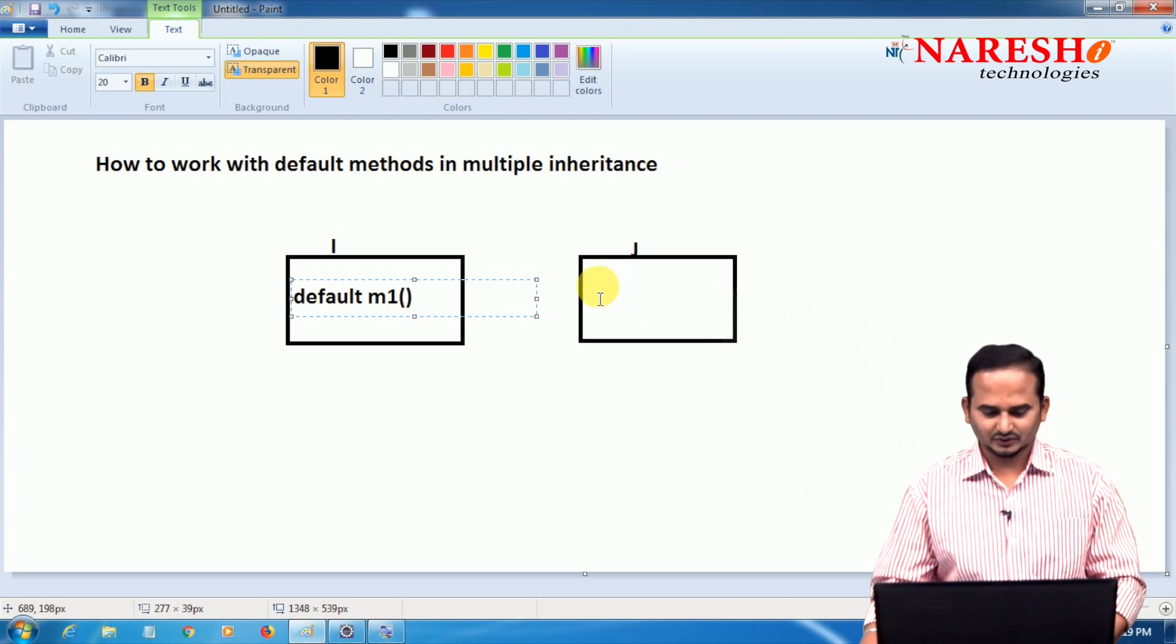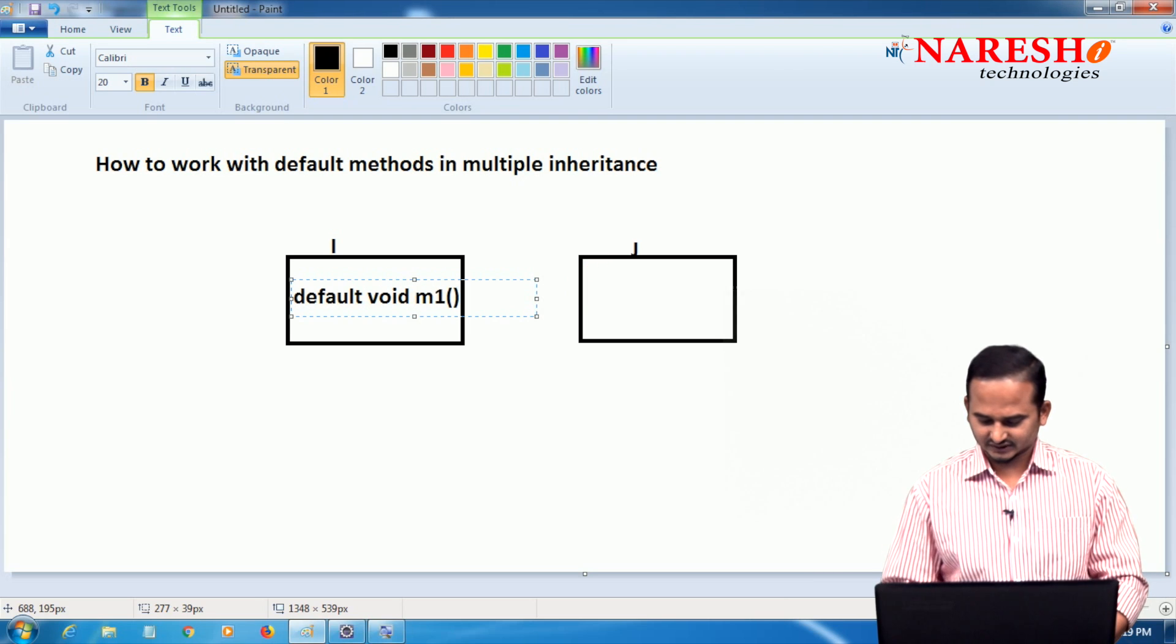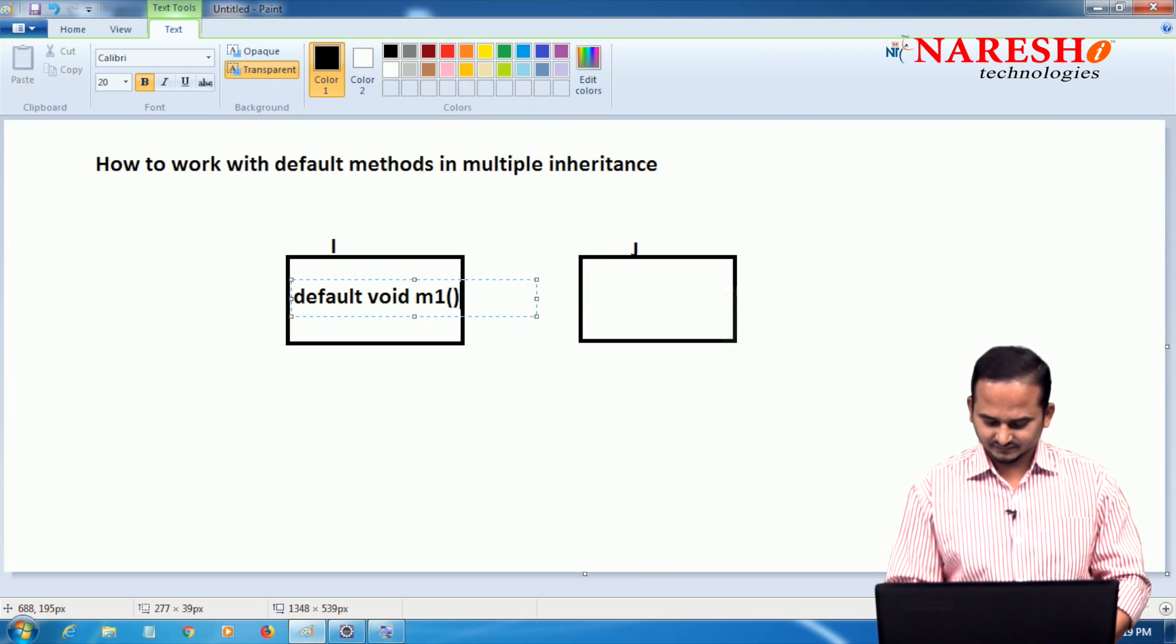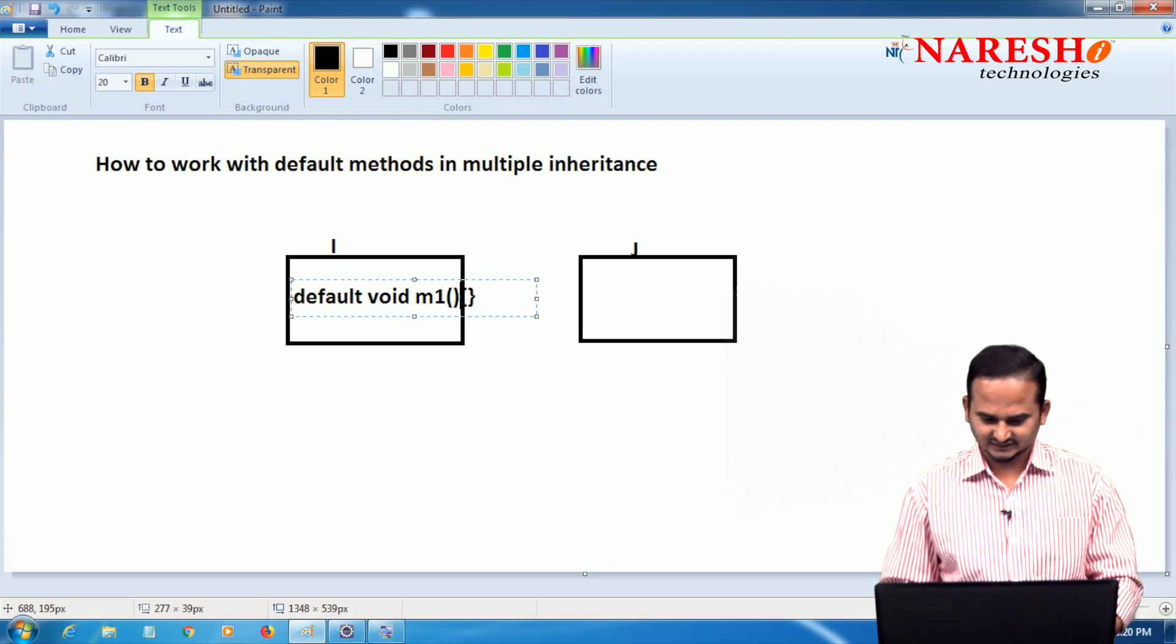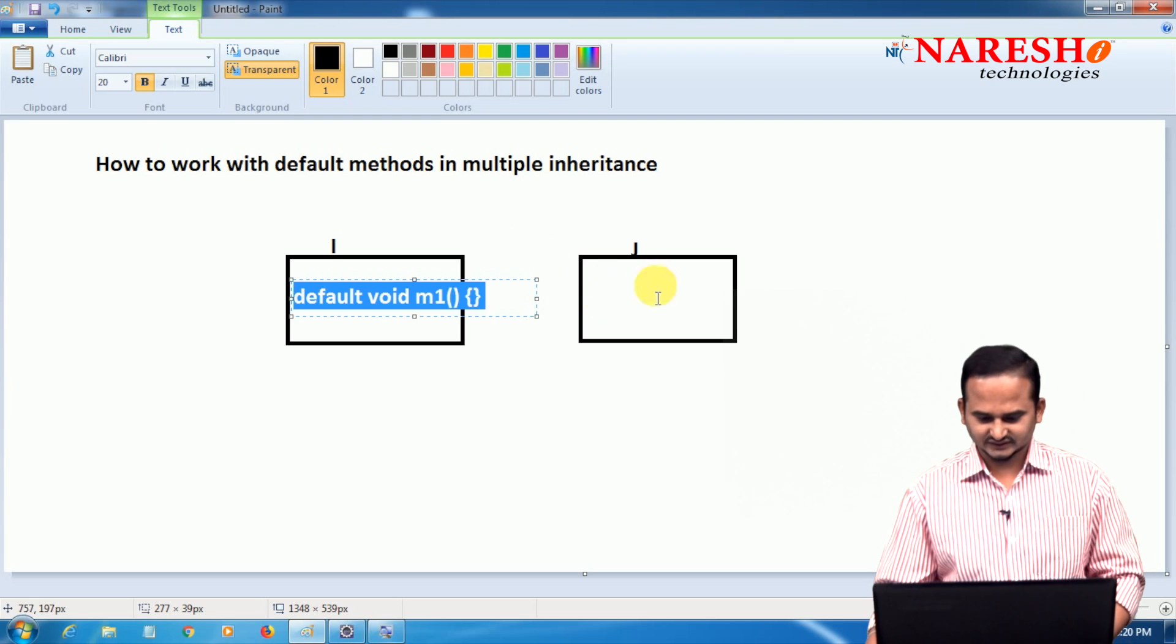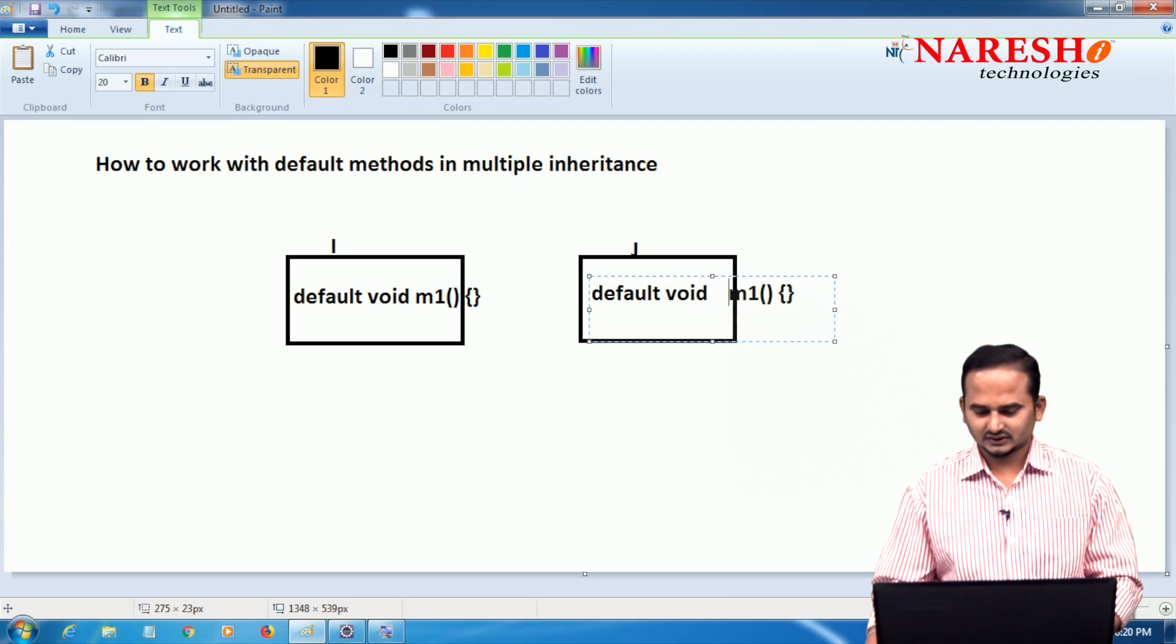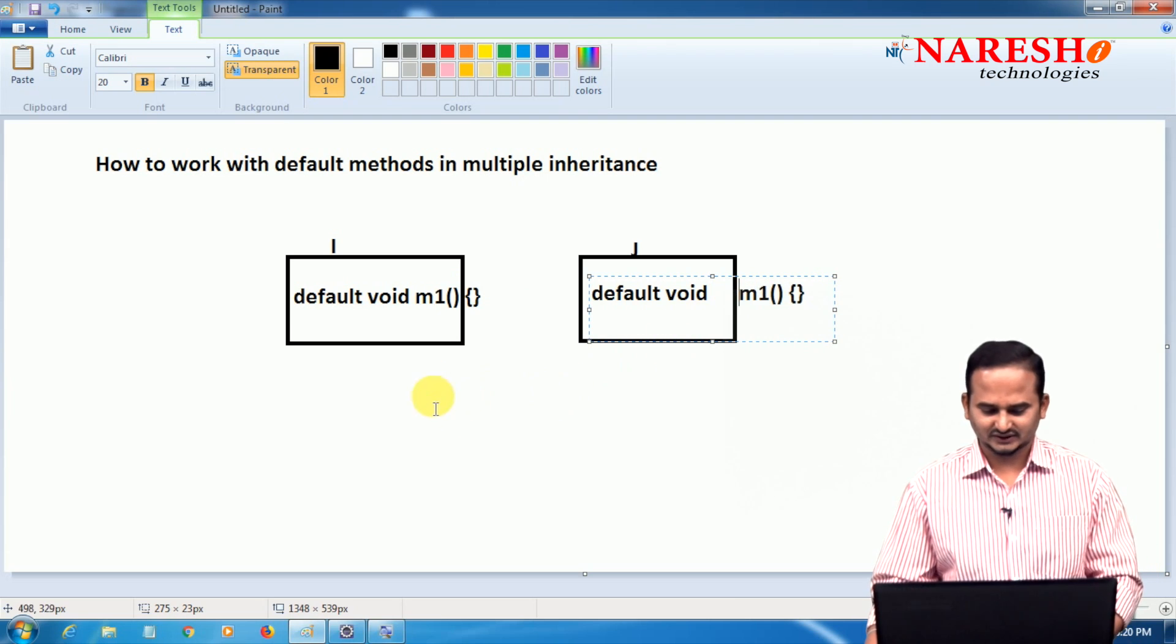And here we have a default method. Here we have a default method like m1 skeleton code. Let me write. There is a method, open and closed parenthesis, open and closed curly braces also. So both the interfaces have the same methods.